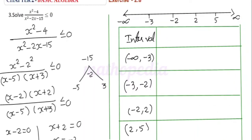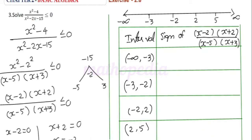Now we check the sign of (x - 2)(x + 2) / [(x - 5)(x + 3)] over each interval. For the first interval (-∞, -3), consider x = -4. Then: (-4 - 2) = -6, (-4 + 2) = -2, (-4 - 5) = -9, (-4 + 3) = -1. That gives (-)(-) / (-)(-) = (+)/(+) = positive. Since the first interval is positive, the second interval should be negative.